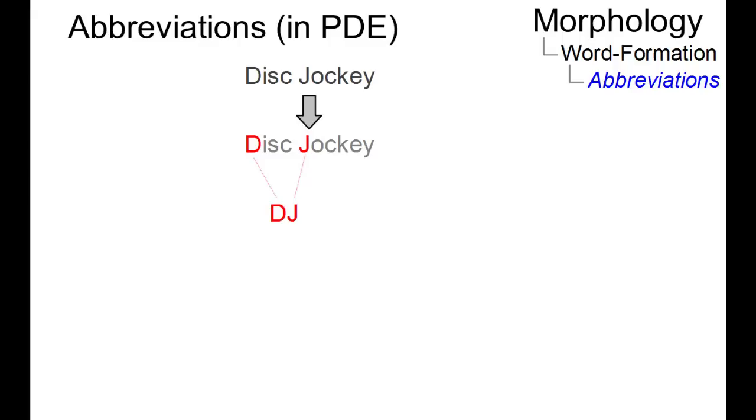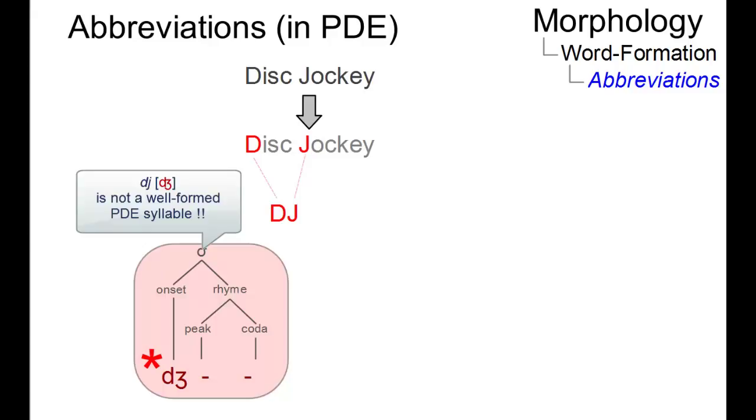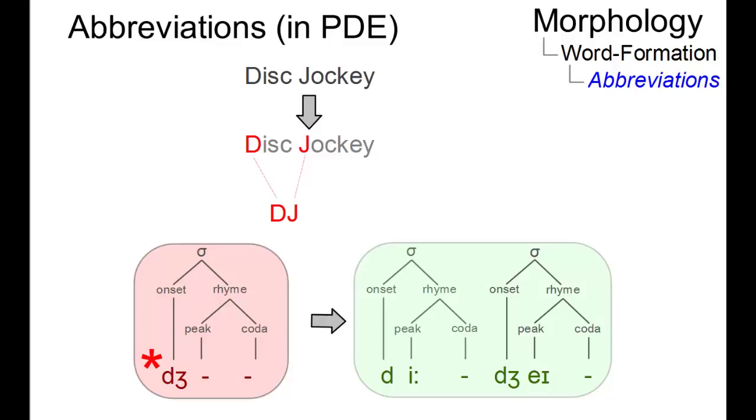Sometimes, abbreviations are created using the initial letters of words but result in non-permissible syllables. In such cases, we just pronounce the initial letters, like DJ. These types of abbreviations are referred to as initialisms.